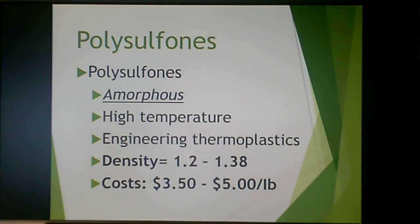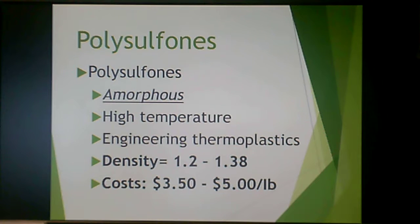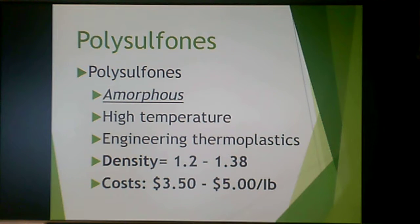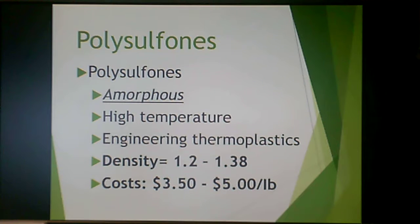One of the differences is that polyphenylene sulfide is semi-crystalline, whereas polysulfones are amorphous and high temperature engineering thermoplastics. These can cost a lot more than polyphenylene sulfide — $3.50 to $5 a pound. So based on the price we're getting a little bit up into the specialty range, but they still produce engineering thermoplastic type properties.